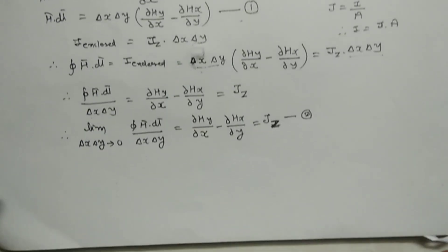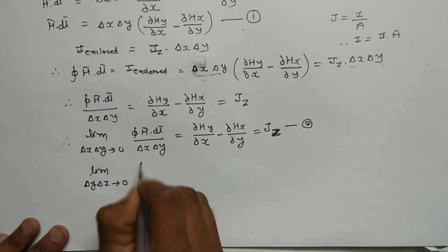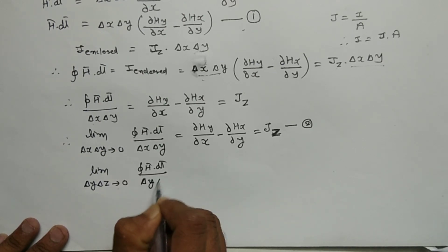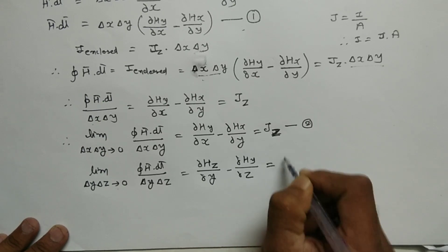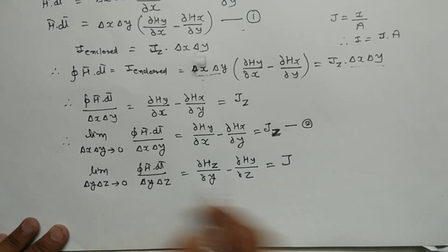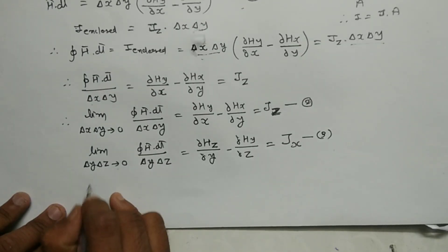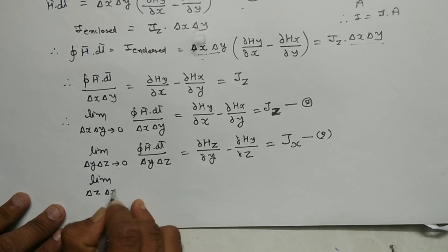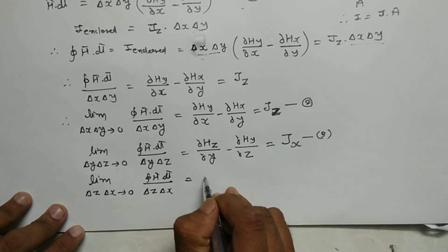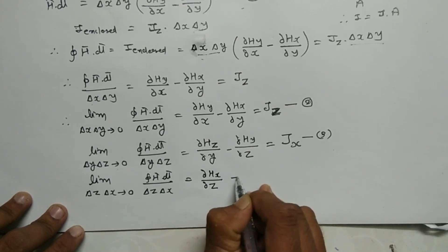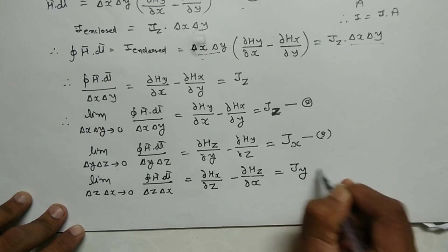Similarly, for limit delta Y, delta Z tending to 0: H bar dot dL bar upon delta Y · delta Z gives del Hz / del Y minus del Hy / del Z equals Jx. That is equation number 3. And for limit delta Z, delta X tending to 0: H bar dot dL bar upon delta Z · delta X gives del Hx / del Z minus del Hz / del X equals Jy. That is equation number 4.